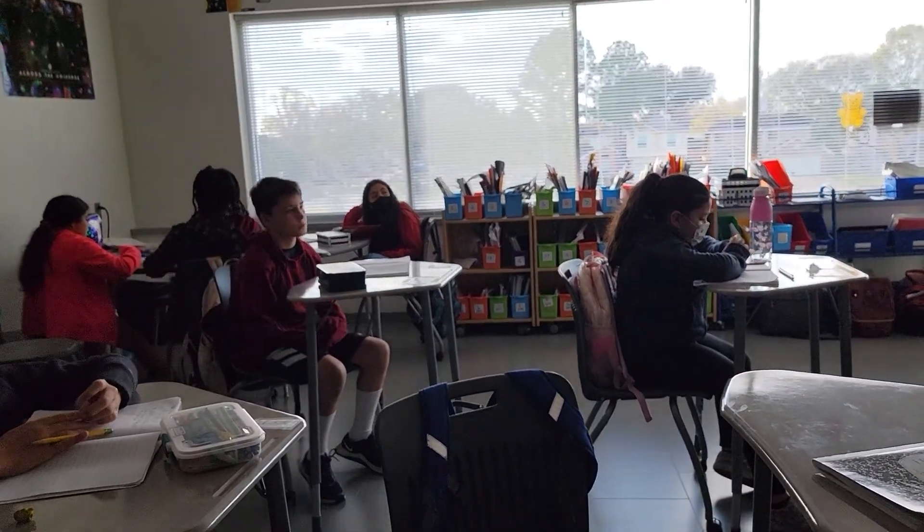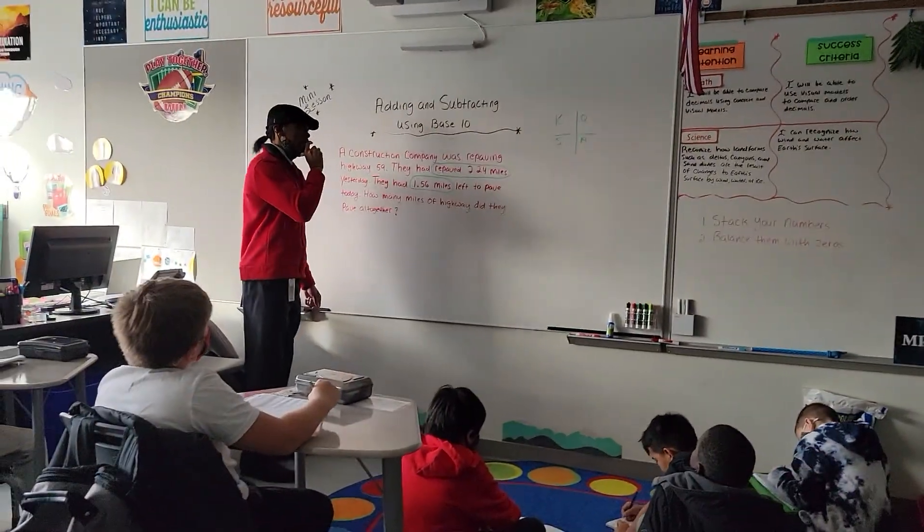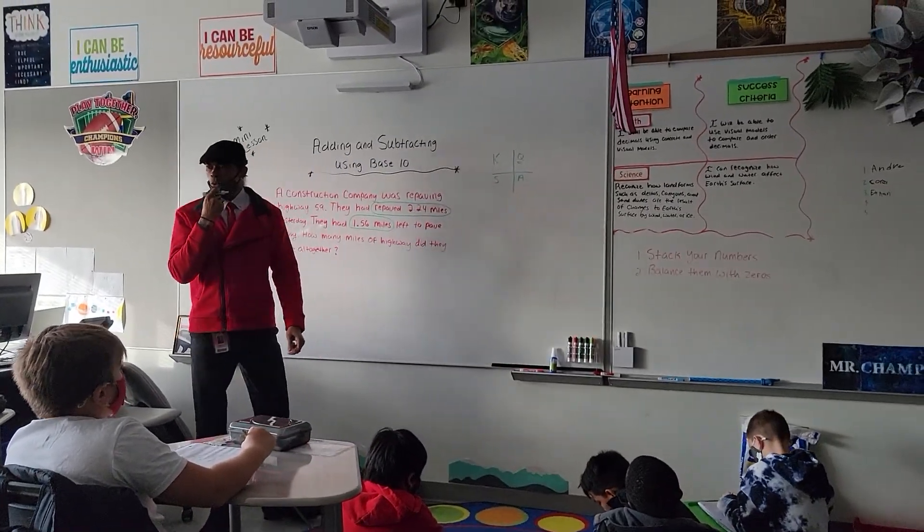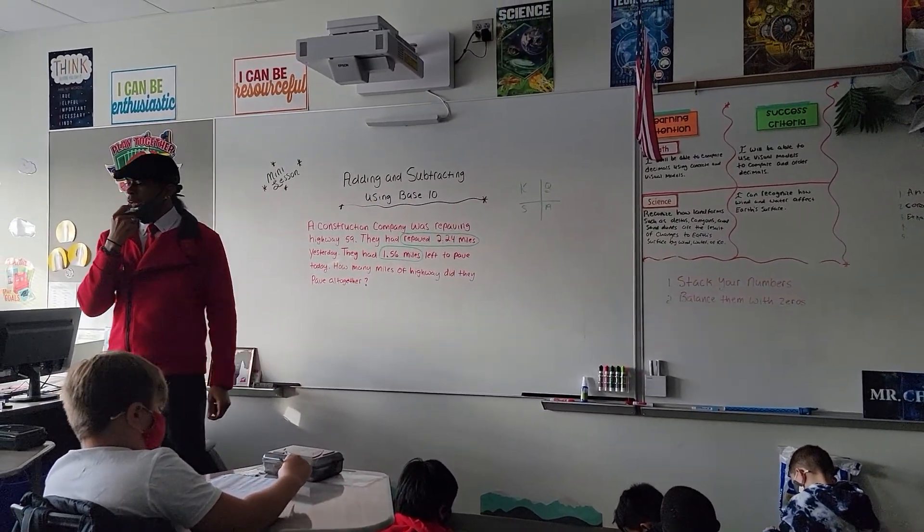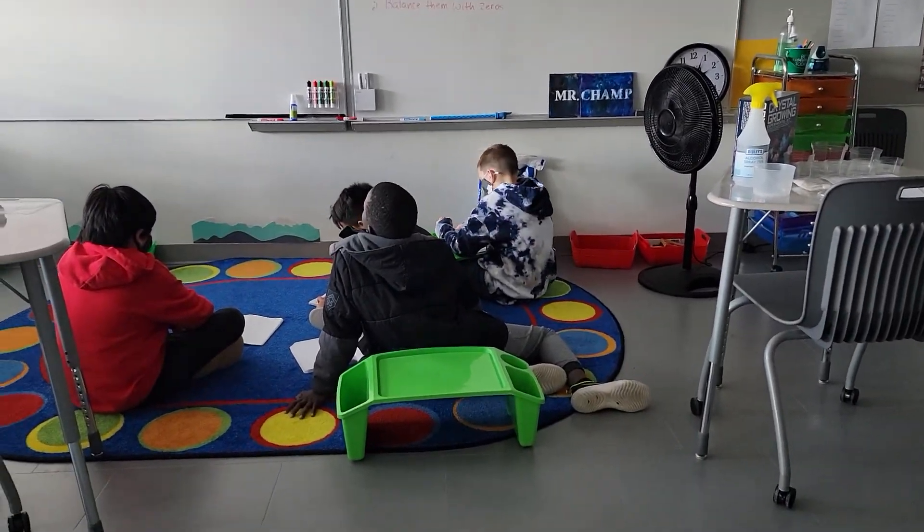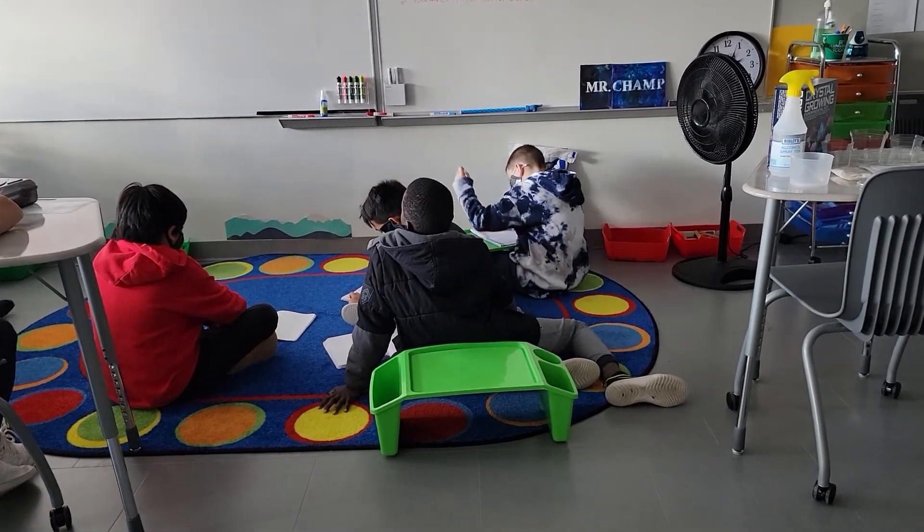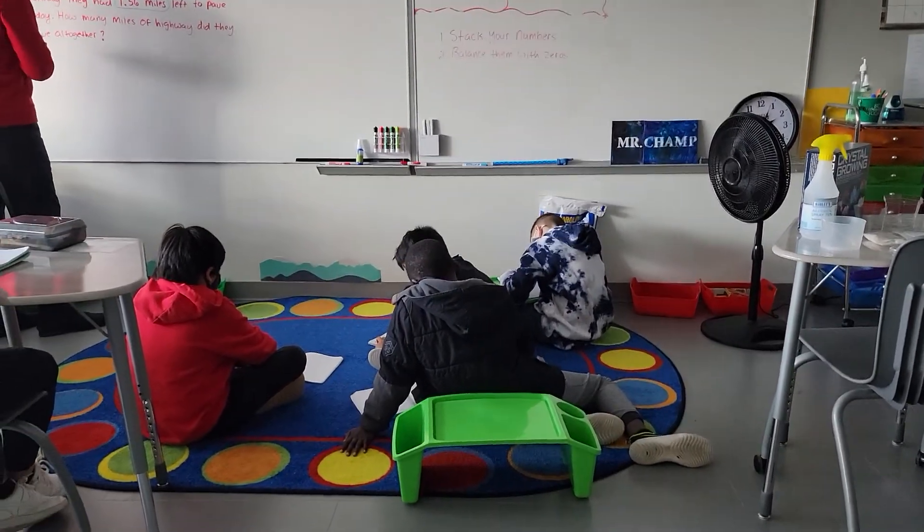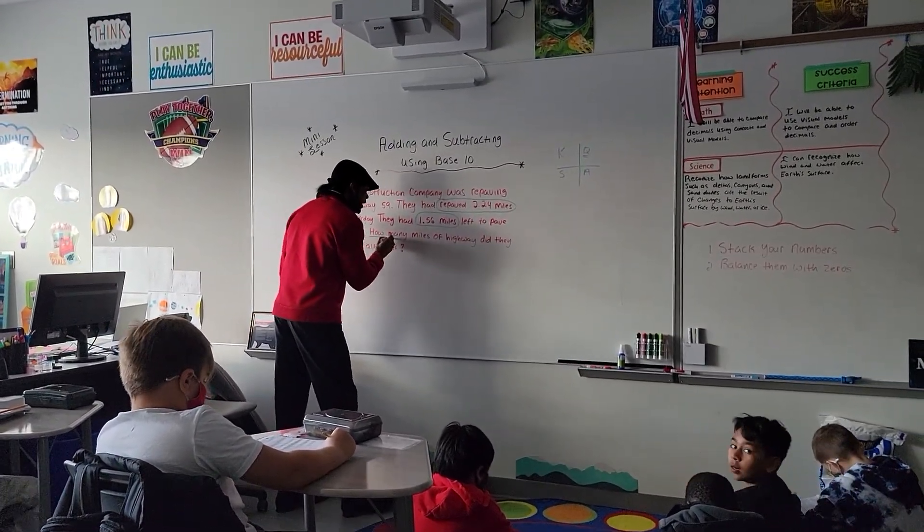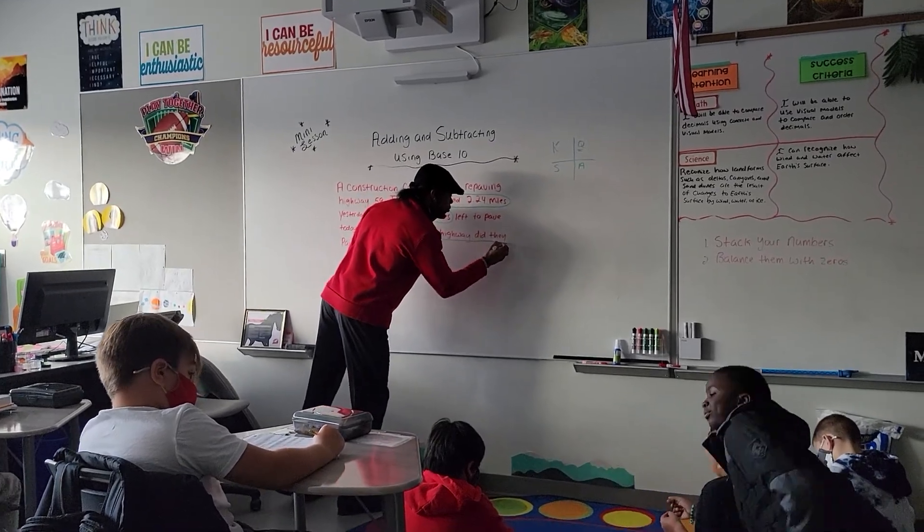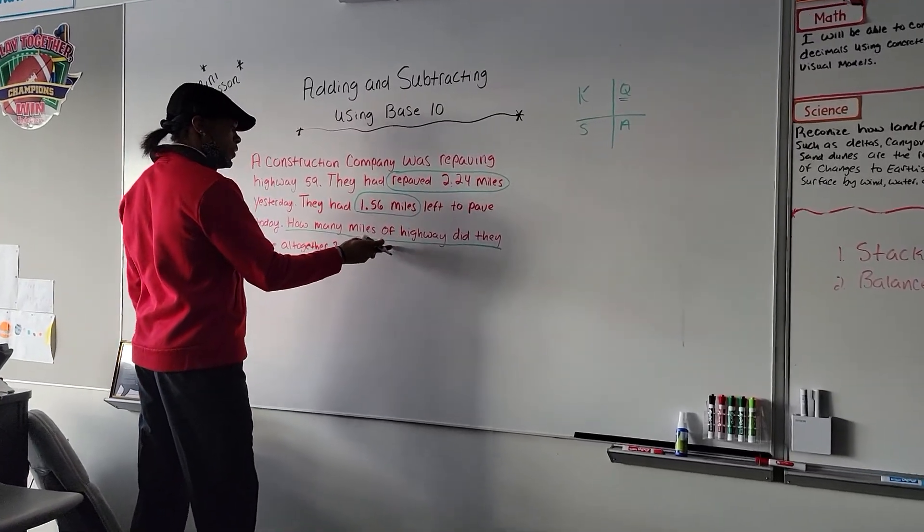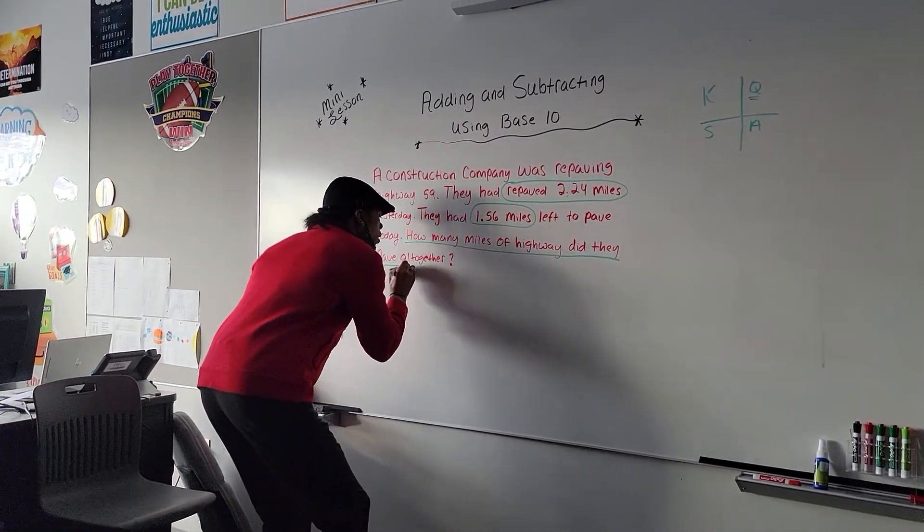So we have 1.56 miles. And what is Q, our question. What is our question asking? Joshua. How many miles of highway did they pay altogether? Right. How many miles of highway did they pay altogether? So this one we underline. So you circle what you know, right? You underline your question.